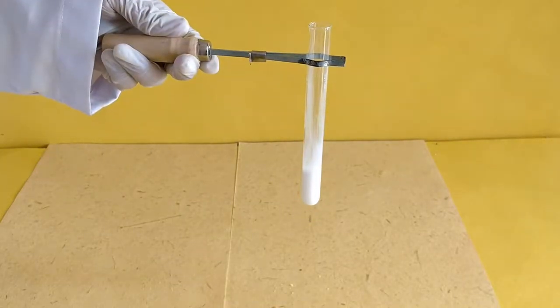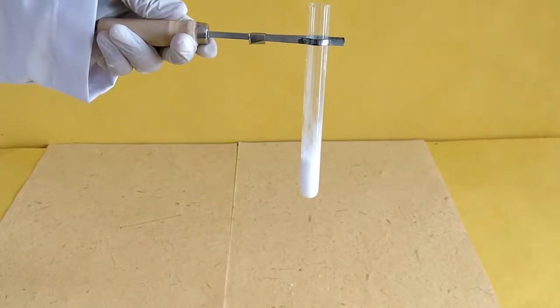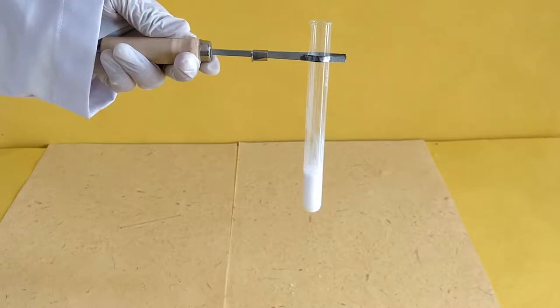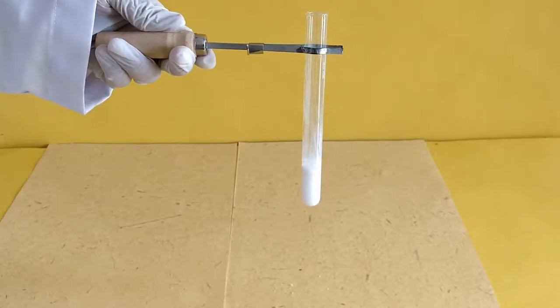You will observe that a white precipitate is formed immediately in the test tube. This is barium sulphate.